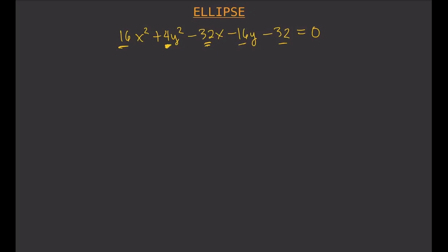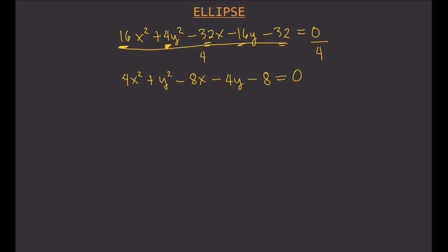The numbers 16, 4, 32, 16, and 32 actually have common factors. So what you can do is divide both sides of the equation by that common factor, which is 4. So 16 divided by 4 becomes 4x squared, 4 divided by 4 gives y squared, 32 divided by 4 gives 8x, and 0 divided by 4 is still 0.